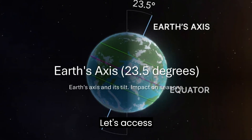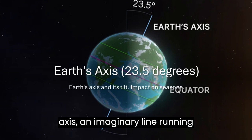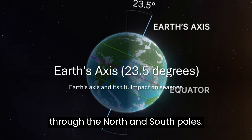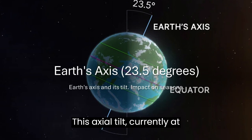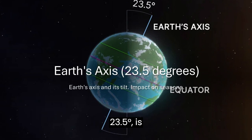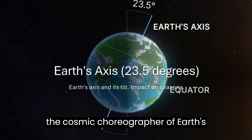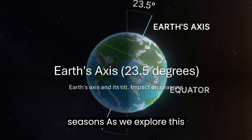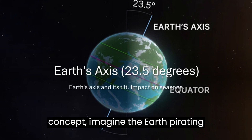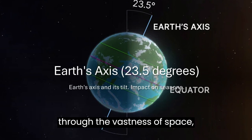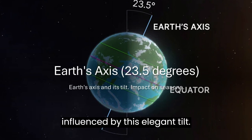Our first destination is Earth's Axis — an imaginary line running through the North and South Poles. This axial tilt, currently at 23.5 degrees, is the cosmic choreographer of Earth's seasons. As we explore this concept, imagine the Earth pirouetting through the vastness of space, influenced by this elegant tilt.